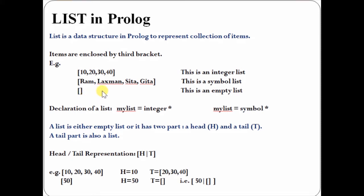We can declare a domain of a list by using an asterisk symbol. For example, mylist = integer* means this is an integer list. mylist = symbol* means it is a symbol list.